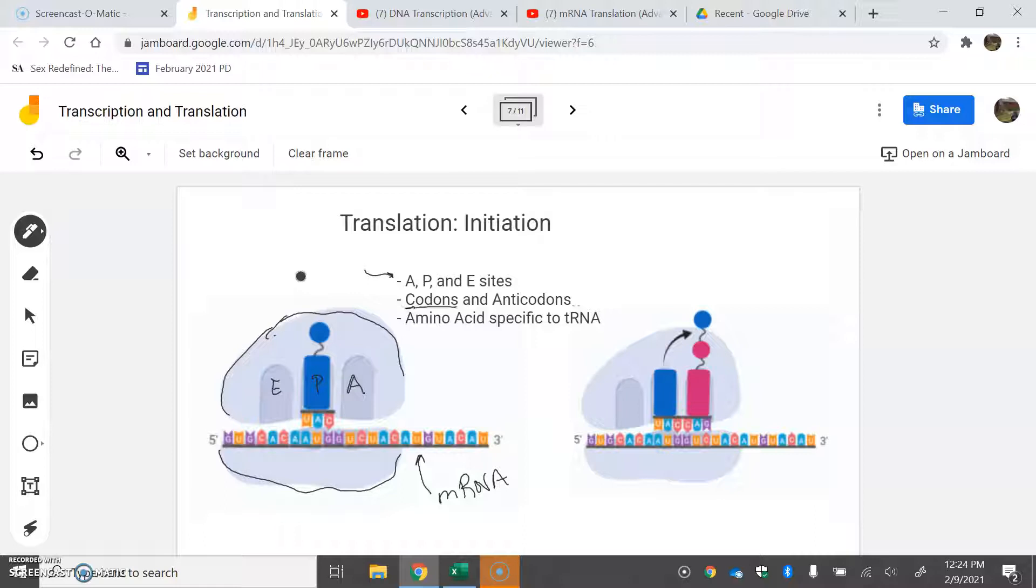Another couple of terms are codons and anticodons. Codons are three-letter sequences found on mRNA. Our first codon is AUG, right here. That's complemented by a tRNA - that's what this blue blob is. It is a type of RNA that transfers an amino acid to the party. This is the amino acid. Amino acids are the building blocks of proteins.